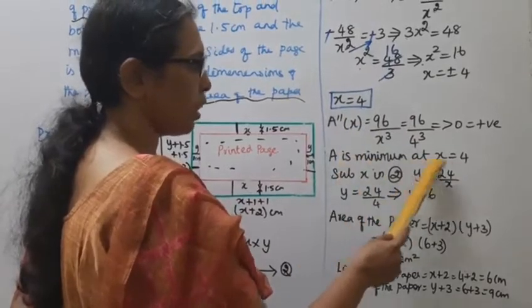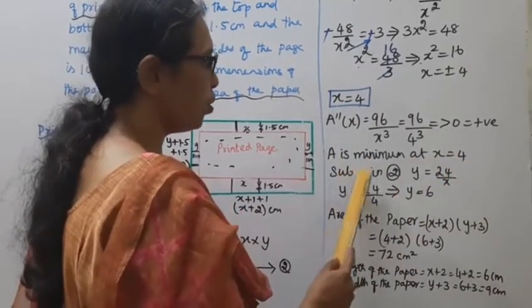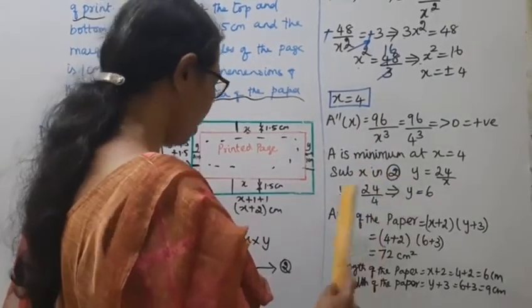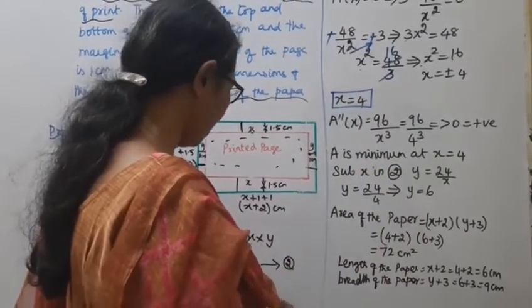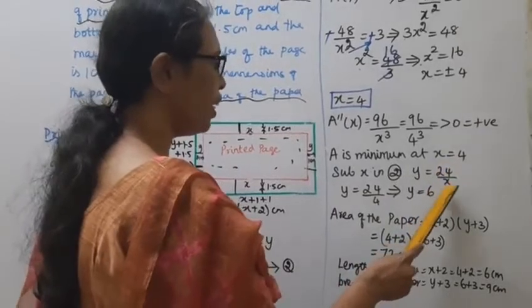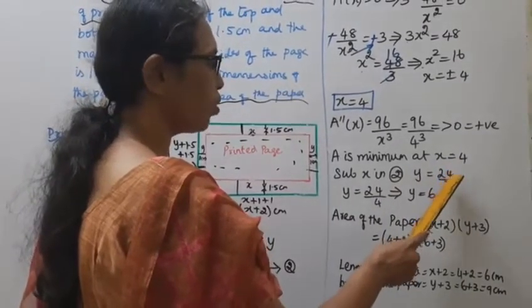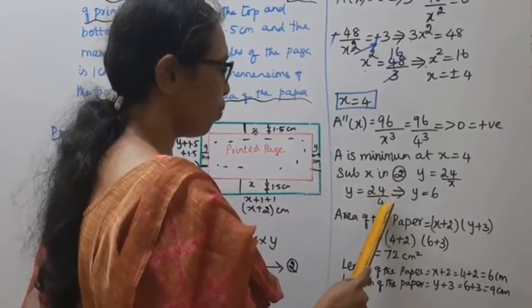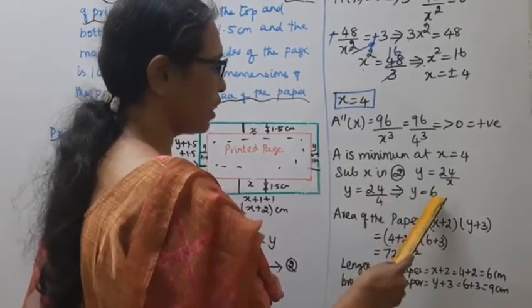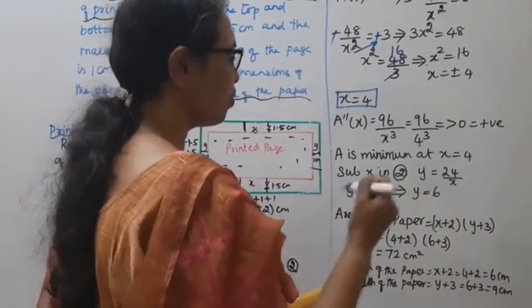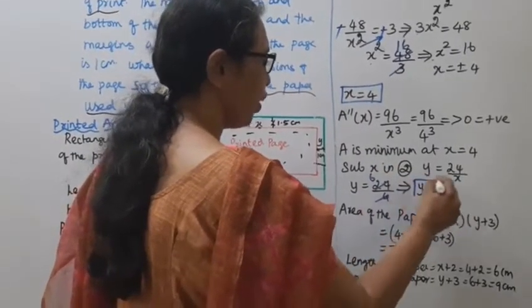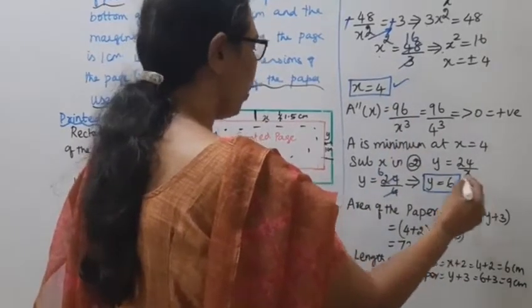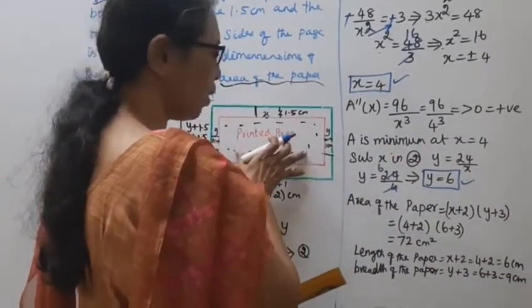A is minimum at x equals 4. Substituting x equals 4 into equation 2: y equals 24 divided by 4, which equals 6. So y equals 6. The printed page dimensions are x equals 4 cm and y equals 6 cm.